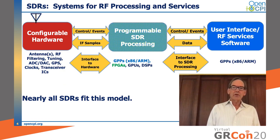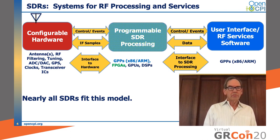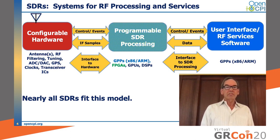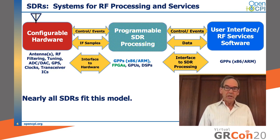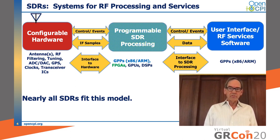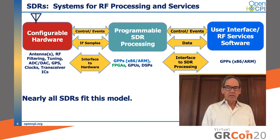Let's start with the basic idea that SDRs can be built in many different ways with different parts, chips, and processors, but they all have a common structure. There is some configurable hardware near the antenna, some programmable processing resources that do the SDR processing — sometimes called modem processing, waveform processing, or just signal processing — and then a user interface or services software integrating the radio into a larger environment.